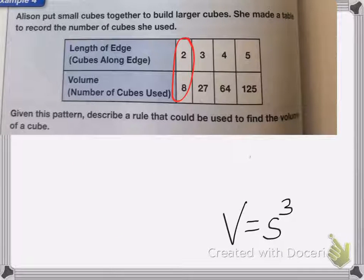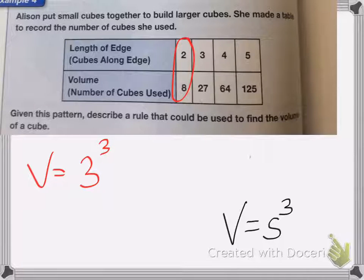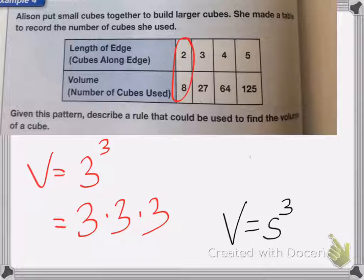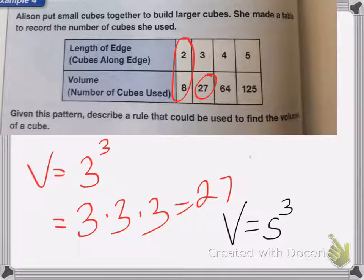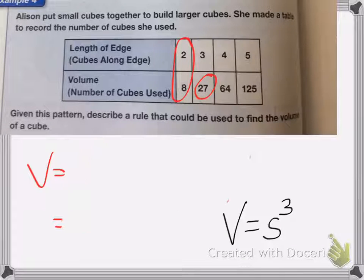Let's double check to see if this works. So let's put in three into my equation here. So volume equals 3 cubed. So that's 3 times 3 times 3. 3 times 3 is 9 times 3 is 27. Did we get that? That's correct.